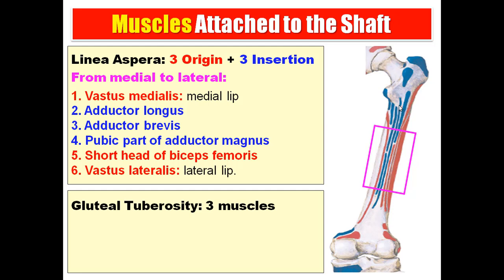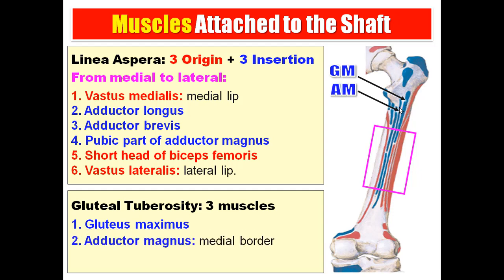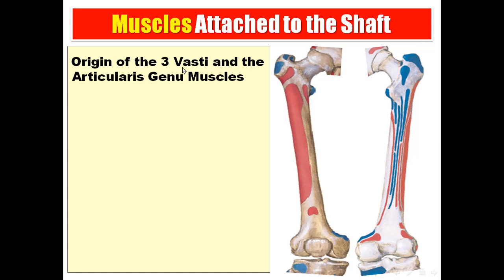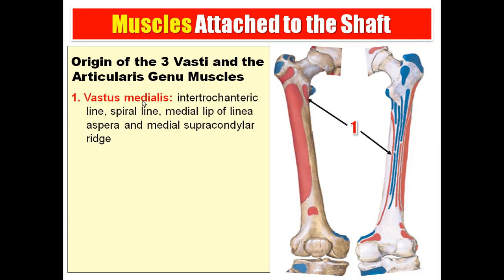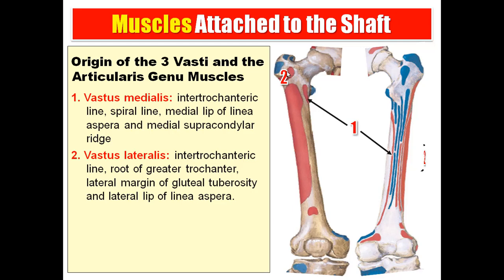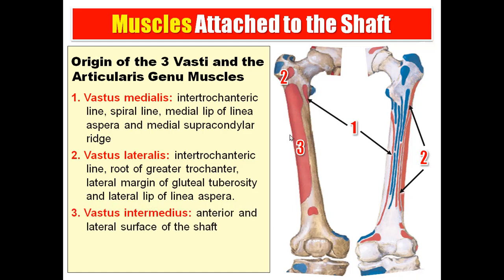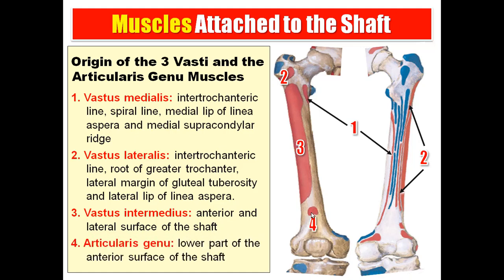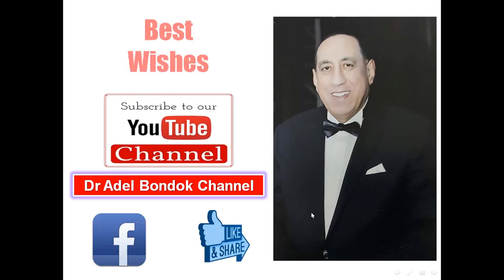The gluteal tuberosity gives attachment to three muscles: gluteus maximus, adductor magnus along the medial border, and vastus lateralis along the lateral border. The origins of the three vastii and articularis genu: vastus medialis originates from the intertrochanteric line, spiral line, medial lip of the linea aspera, and medial supracondylar ridge. Vastus lateralis originates from the root of the greater trochanter, intertrochanteric line, lateral margin of the gluteal tuberosity, and lateral lip of the linea aspera. Vastus intermedius originates from the anterior and lateral surface of the shaft. Articularis genu originates from the lower part of the anterior surface of the shaft. Thank you very much, best wishes, and good luck.